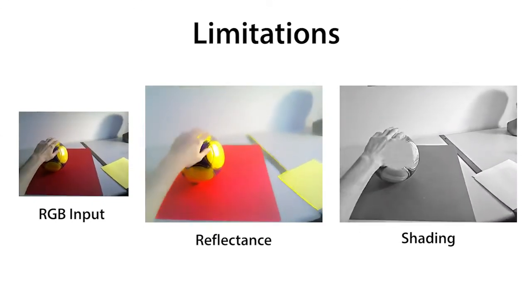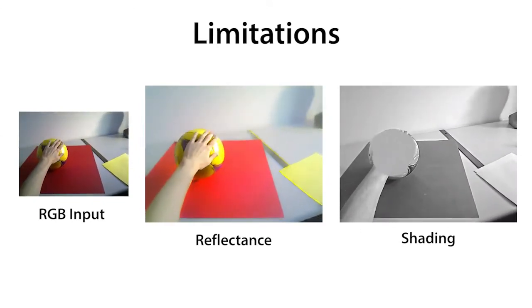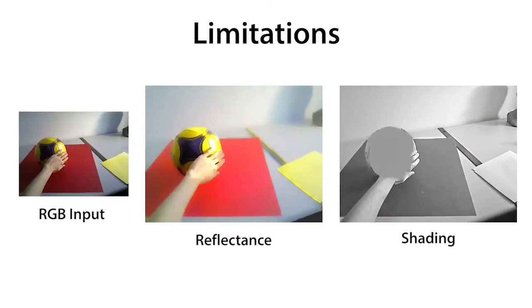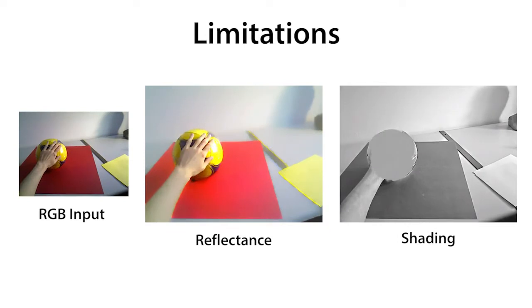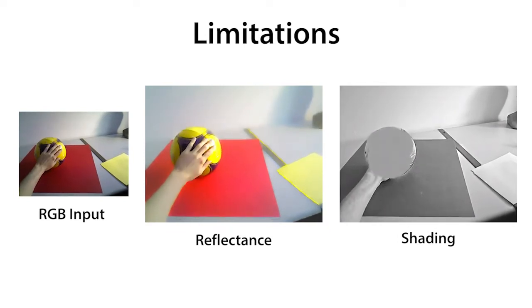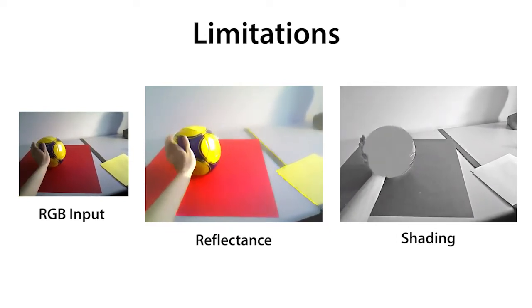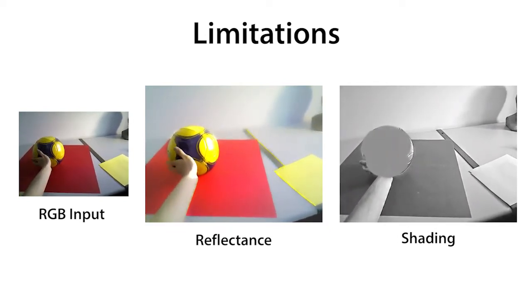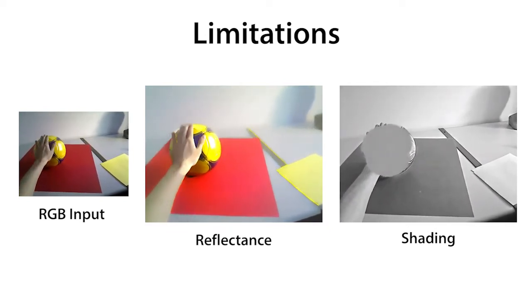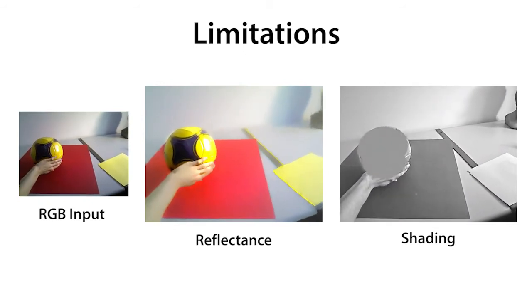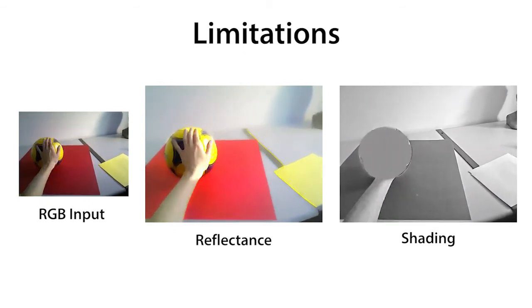As for limitations, constant shading strokes do not work well with curved objects or specular highlights, such as on the ball, since ground truth shading is not constant. This can be an avenue for future work.